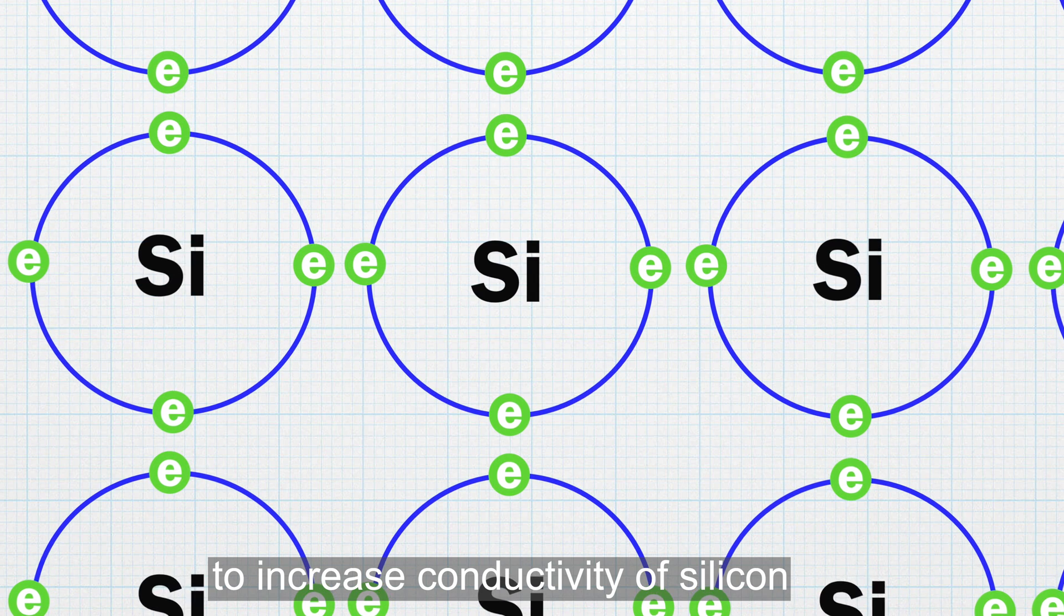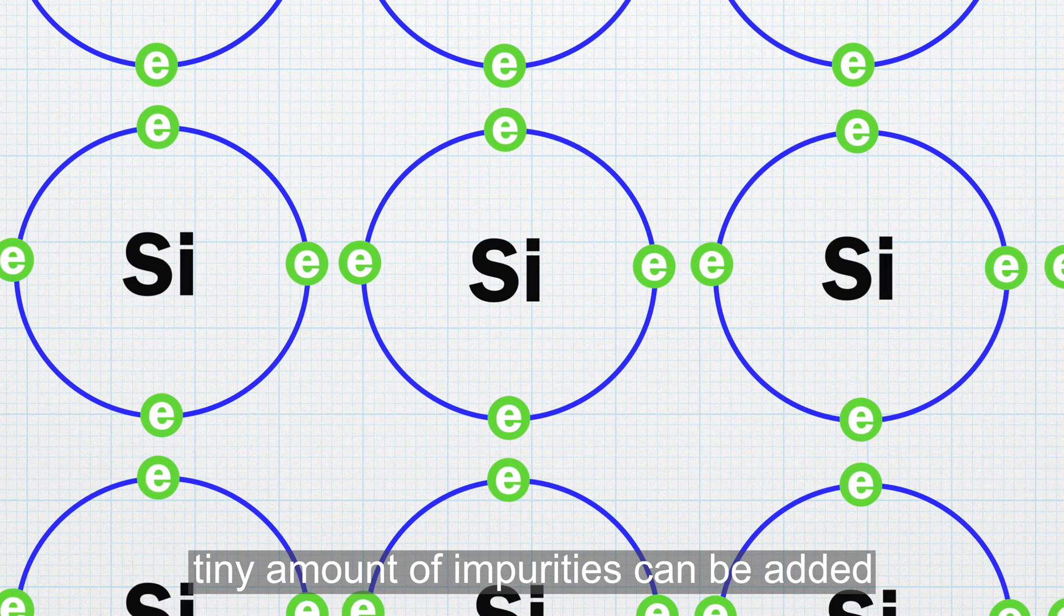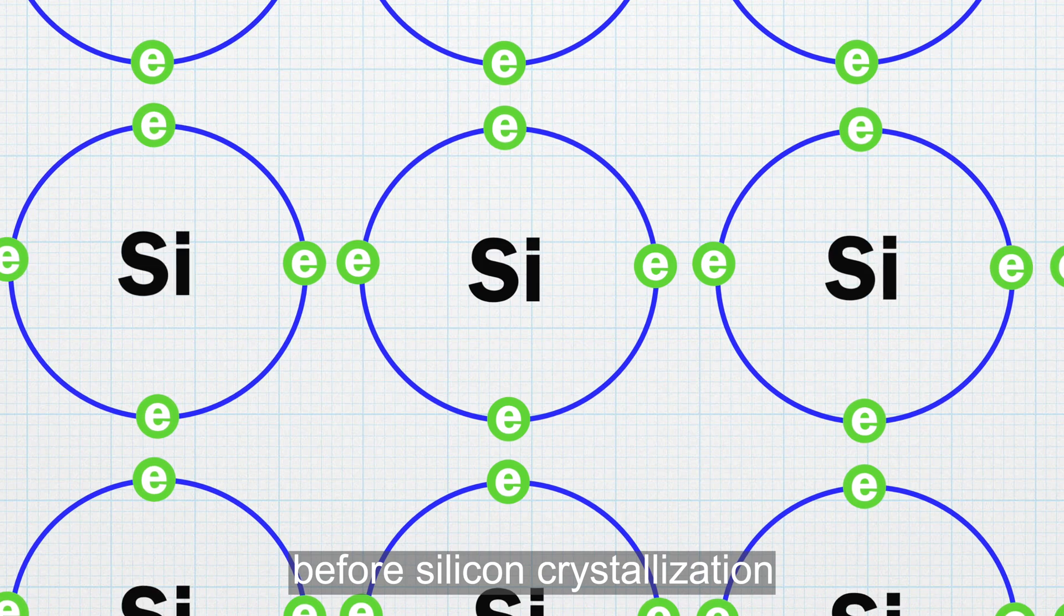To increase conductivity of silicon, tiny amounts of impurities can be added before silicon crystallization. Now, this process is called doping.